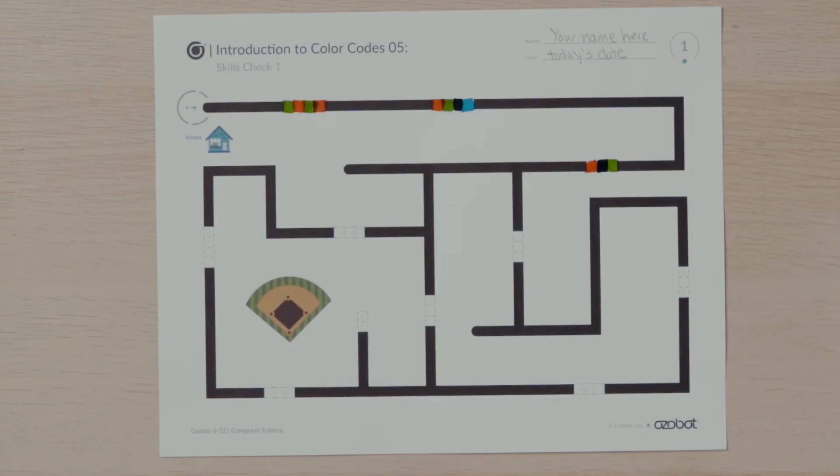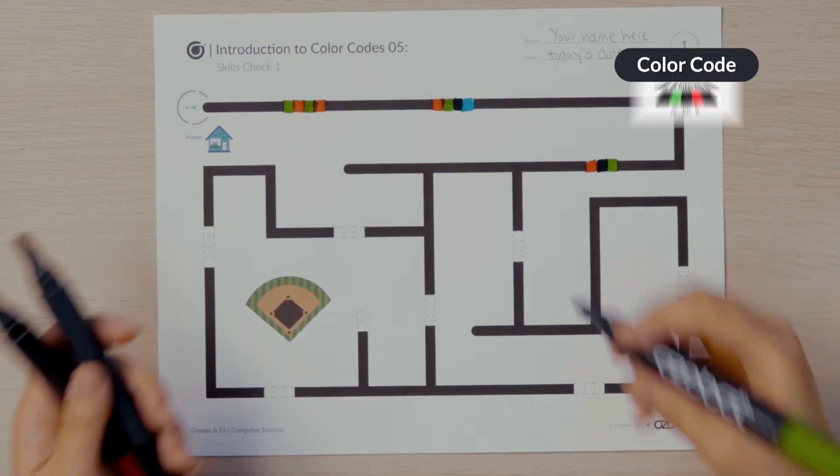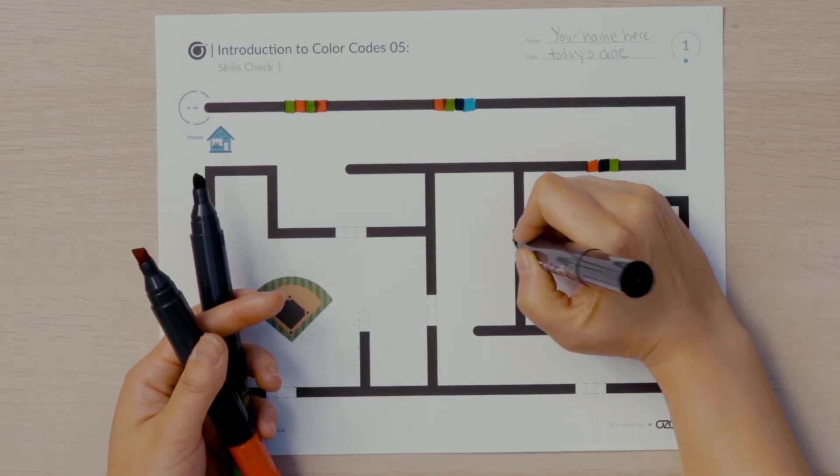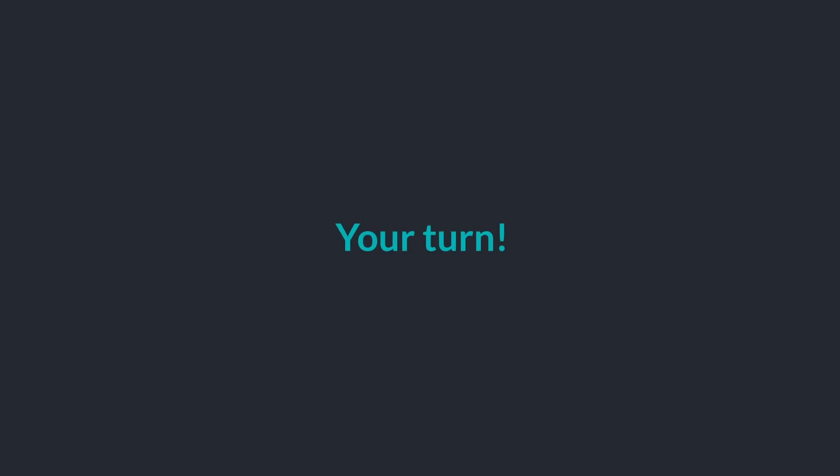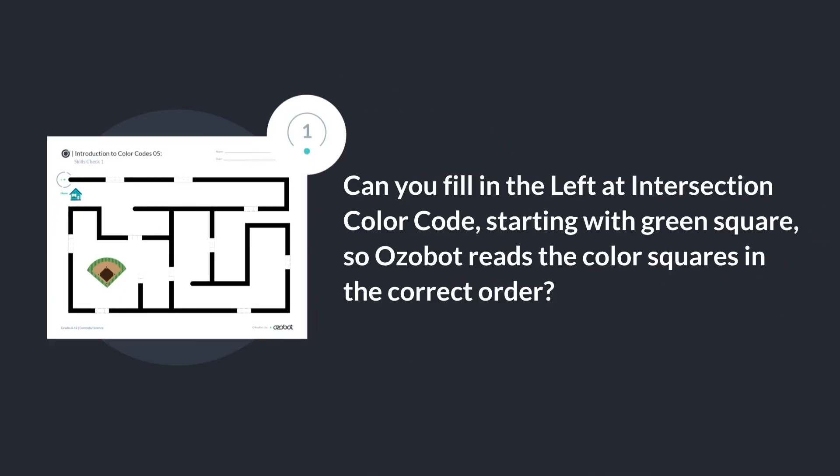As Ozobot goes left at the first intersection, it comes to another color code space and another intersection. Again, look carefully to decide which color code to use. Notice the direction your bot will be traveling as it arrives at the next intersection. Turn your paper around if needed. Your bot should make a left turn. I'll color the block starting with green at the top so that it is the first block my bot will read as it goes over the color code. Can you fill in the left at intersection color code starting with the green square so Ozobot reads the colored squares in the correct order?